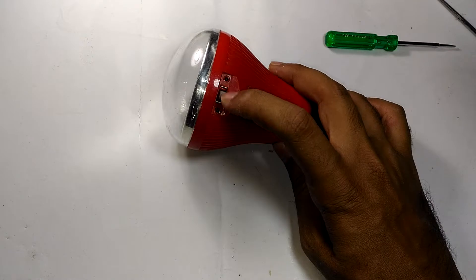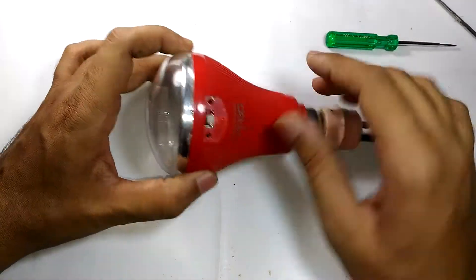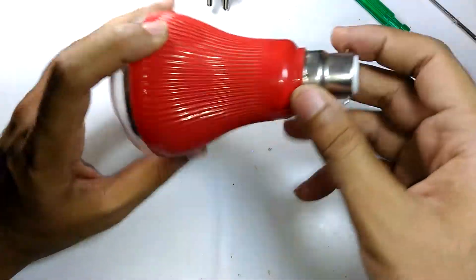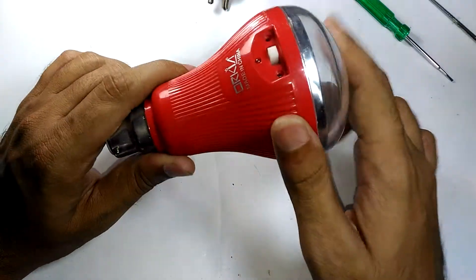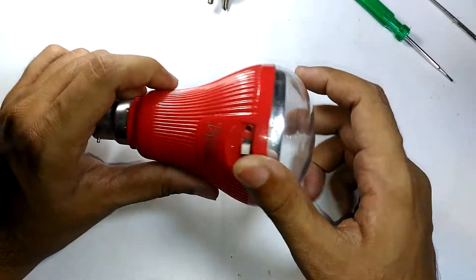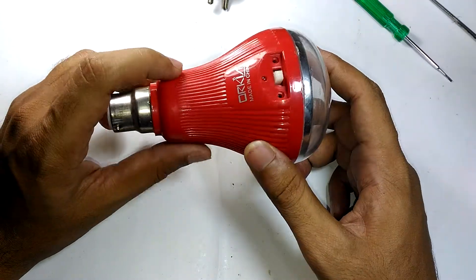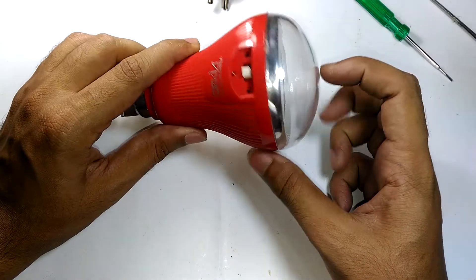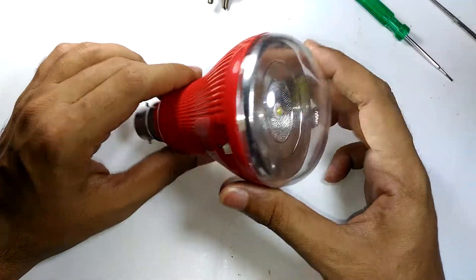So let's take a look at what's inside. I don't think it has a lot of circuits inside. It definitely has a battery—probably a lead-acid battery, as these kinds of Chinese devices usually come with.